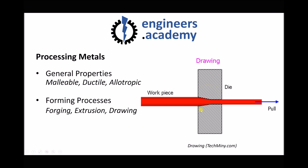But there are some other important considerations when using forming processes, and one of those considerations relates to something called work hardening. Basically, when the material is either forced or pulled through the die it undergoes plastic deformation. As a result of that plastic deformation the properties of the material actually change — the material exiting the die is going to be harder and stronger than the material entering the die. In this video we're going to look at the reasons why work hardening occurs as the material plastically deforms moving through the die.